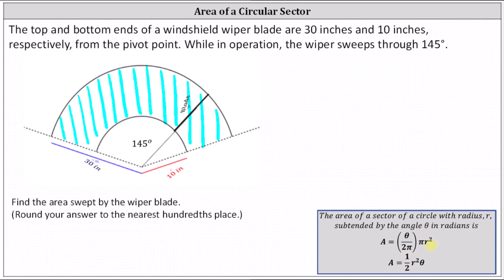This formula shows the area of a sector is equal to the fraction of the area of a circle. Simplifying, we have the area of the sector equals one-half r²θ.